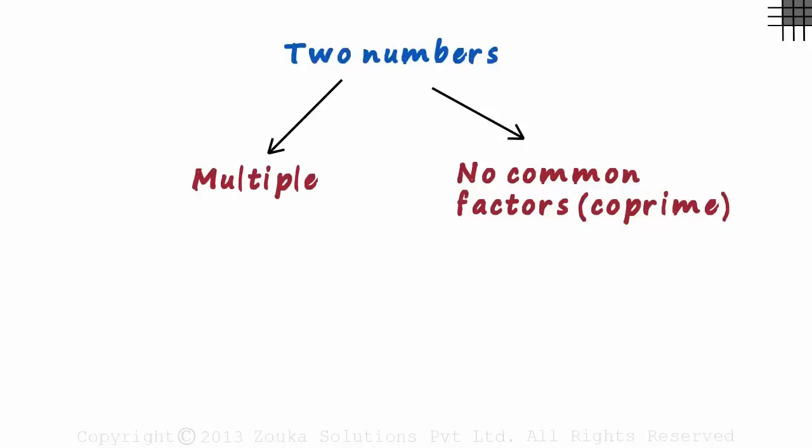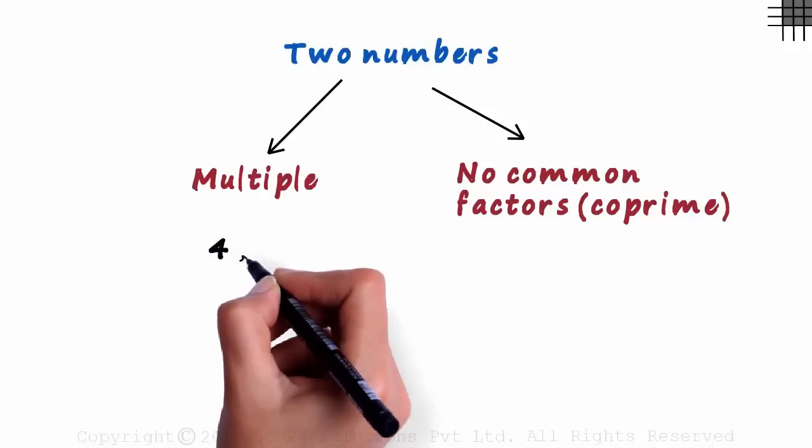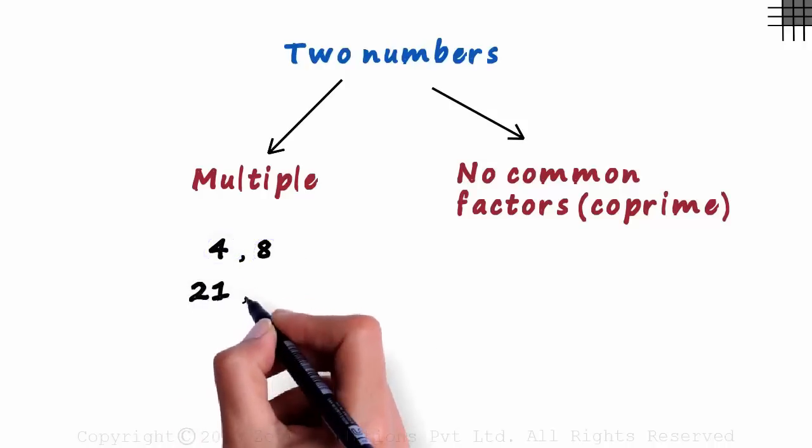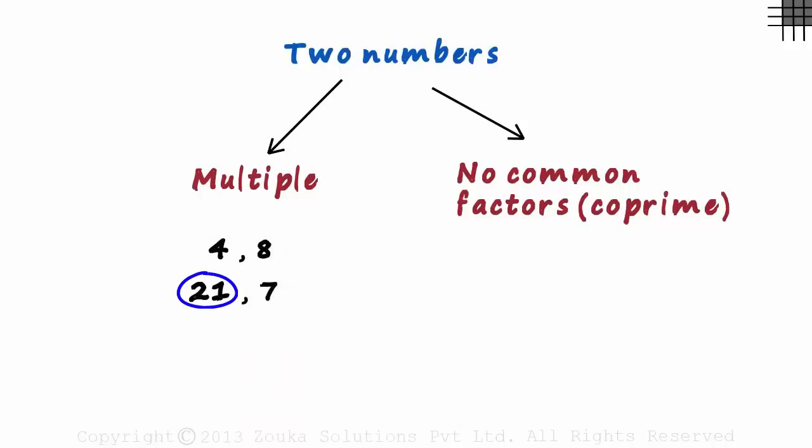The first case would have numbers like 4 and 8. 8 is a multiple of 4. Or numbers like 21 and 7. 21 is a multiple of 7. One number is a multiple of the other.